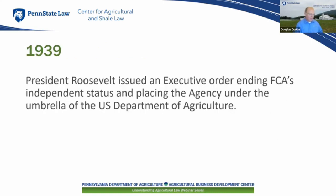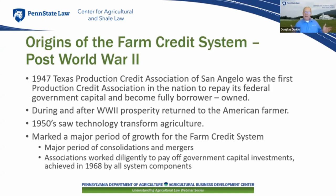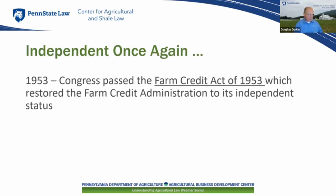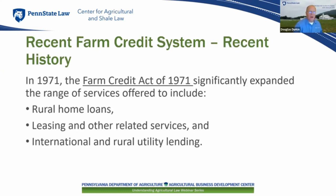After World War II, in the 1950s, there was prosperity in America and in agriculture, which resulted in a great consolidation of various small associations throughout the United States. By 1968, that prosperity had resulted in paying off all the government funds used from 1933 onward to rescue the system, and the system was once again free of any government funding.